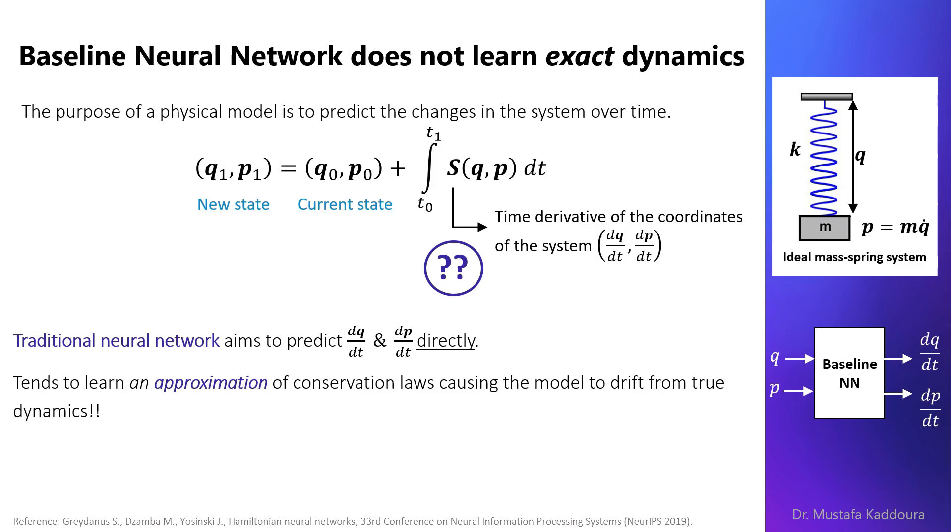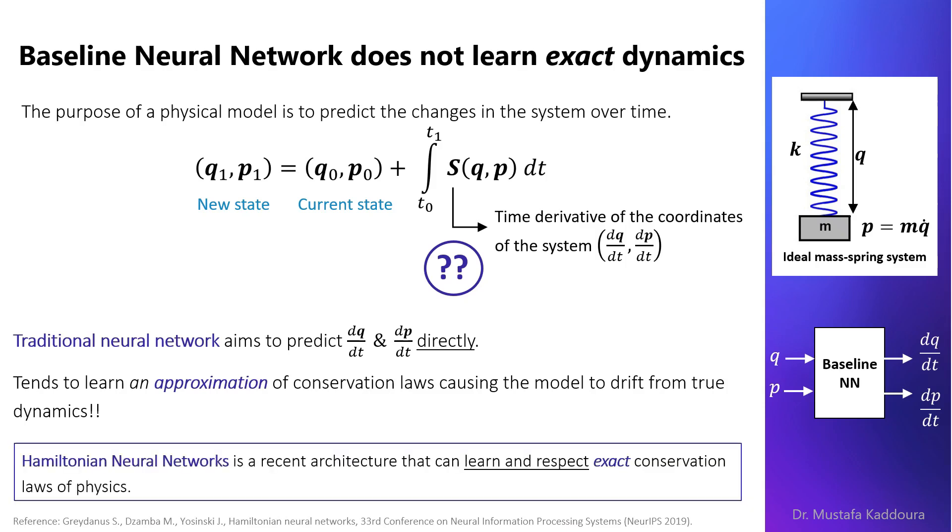In this area we have the Hamiltonian neural networks which is a recent architecture that can learn and respect exact conservation laws of physics which I will discuss in the next slide.